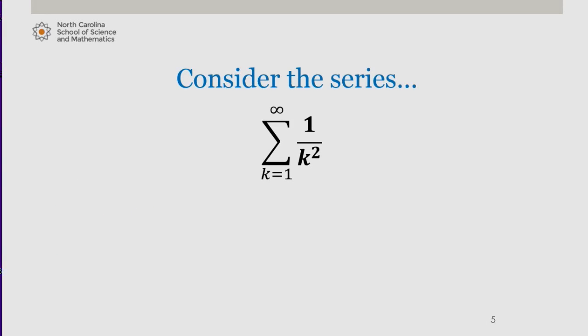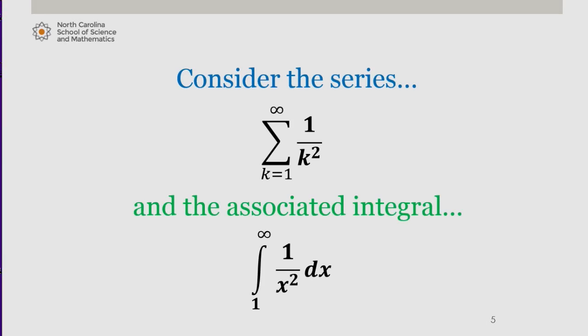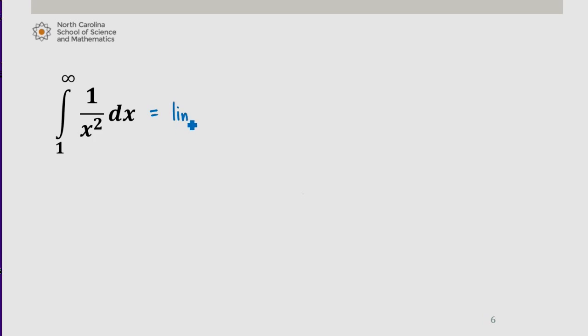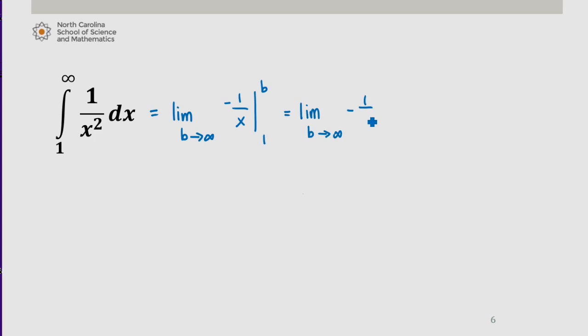Let's consider a second example: the series, the sum from 1 to infinity of 1 over k squared, and its associated integral, the integral from 1 to infinity of 1 over x squared dx. If we evaluate this integral, we find that it's equal to the limit as b approaches infinity of negative 1 over x, evaluated from 1 to b. Using the fundamental theorem of calculus, this equals the limit as b approaches infinity of (negative 1 over b) minus (negative 1 over 1). The limit of this term is 0, so this integral equals 1, which means it converges.